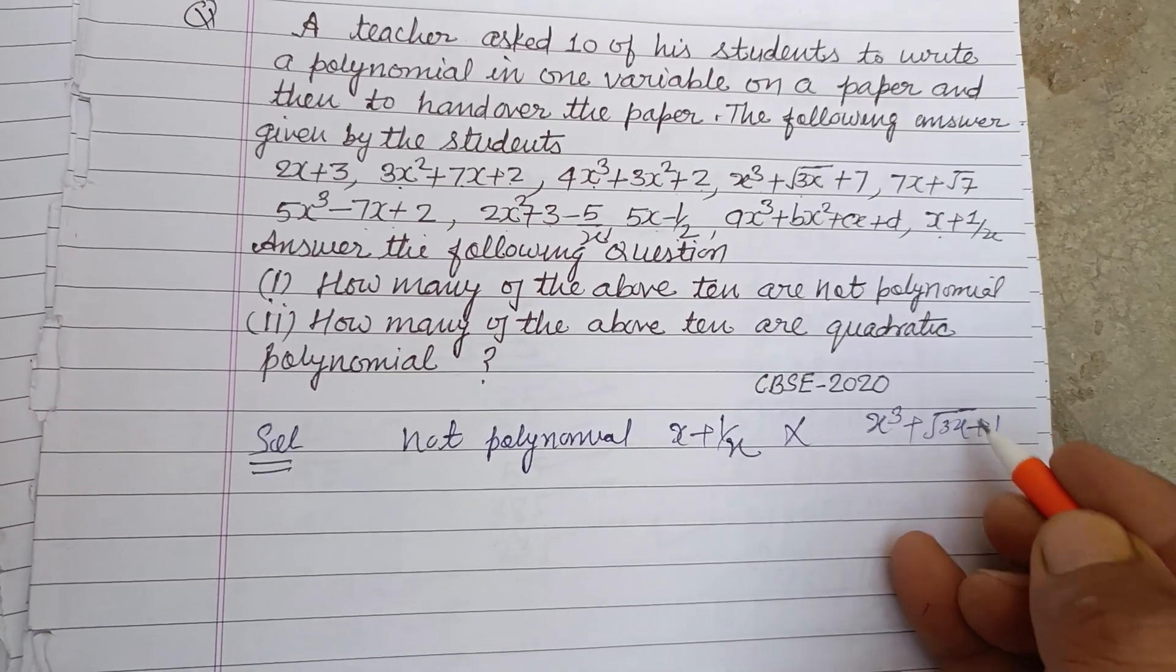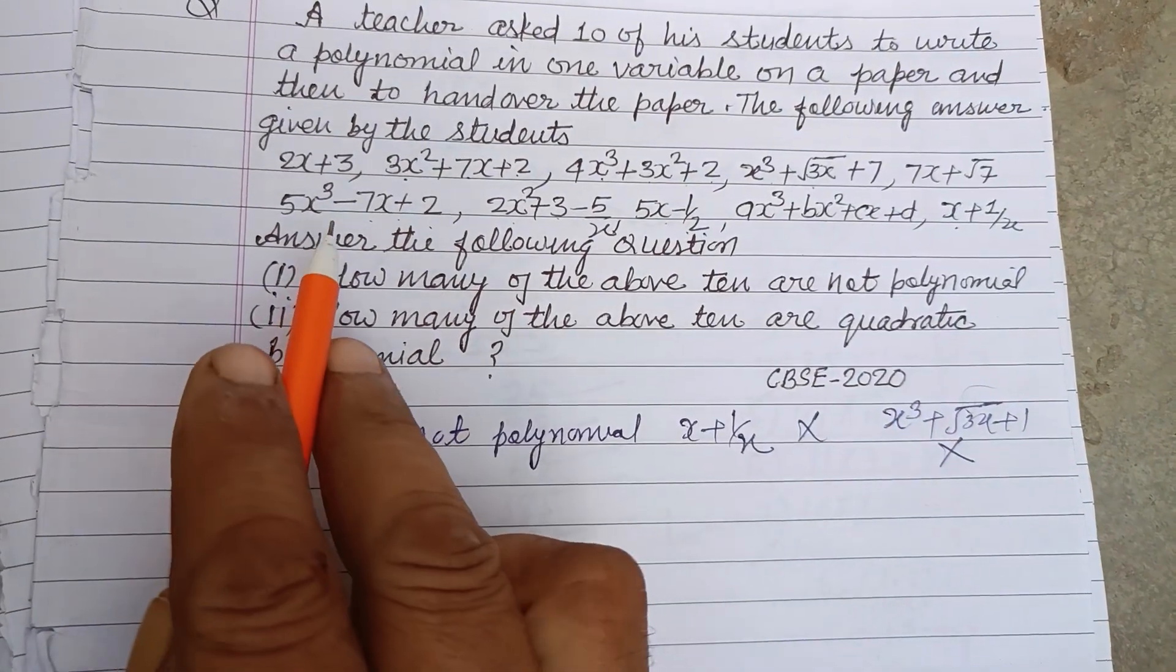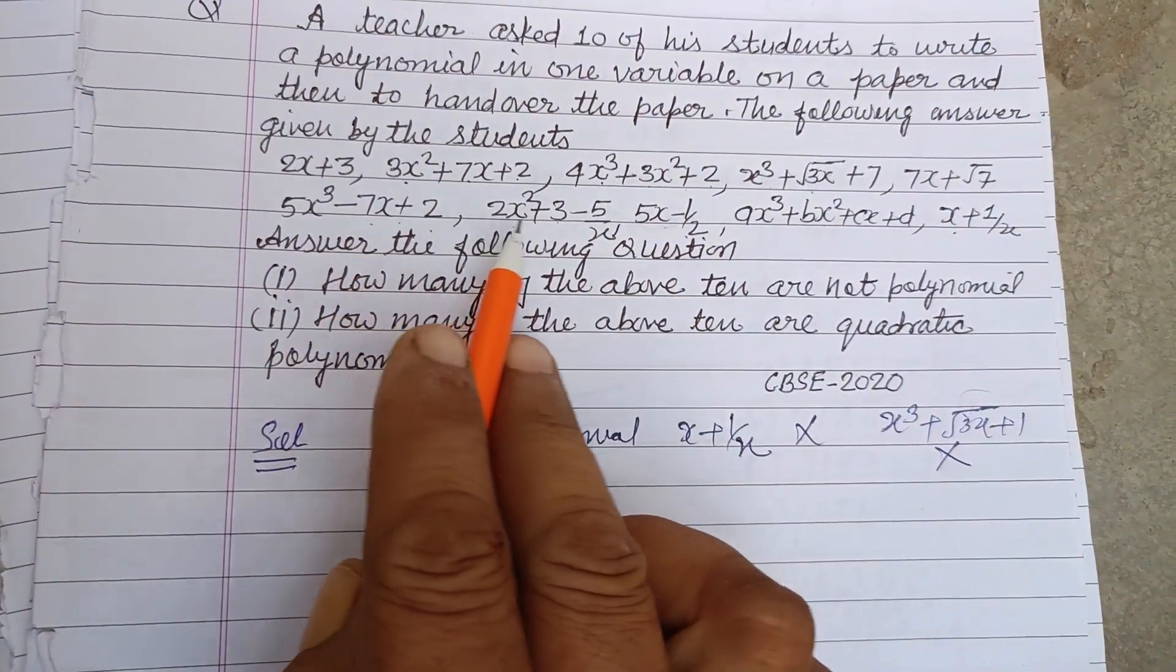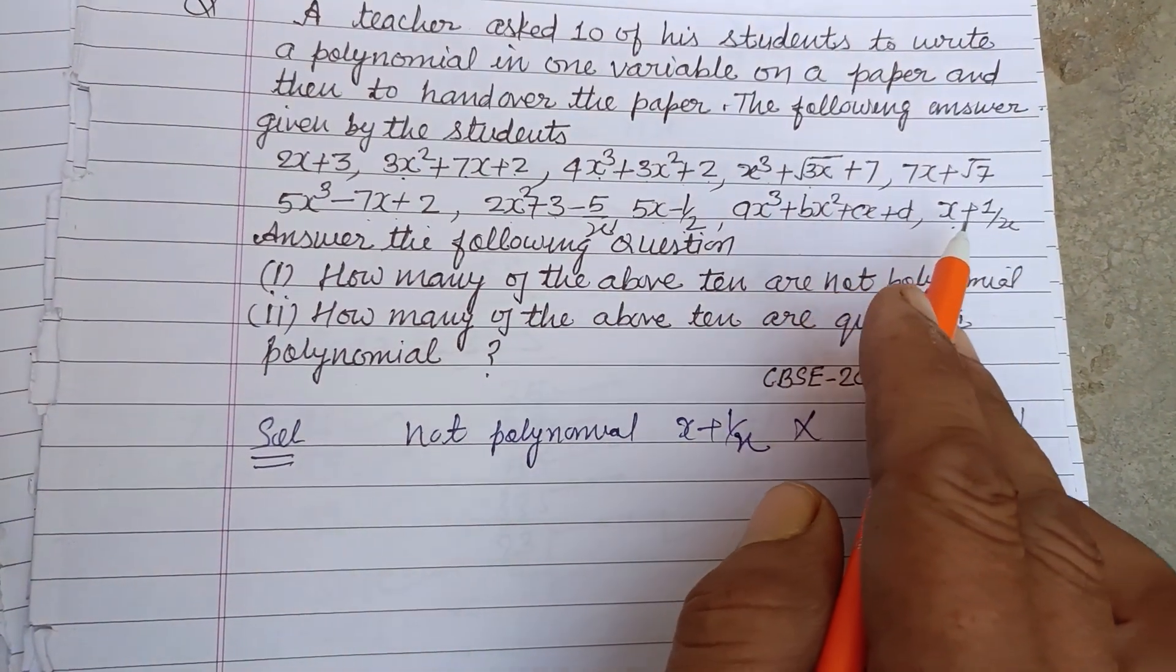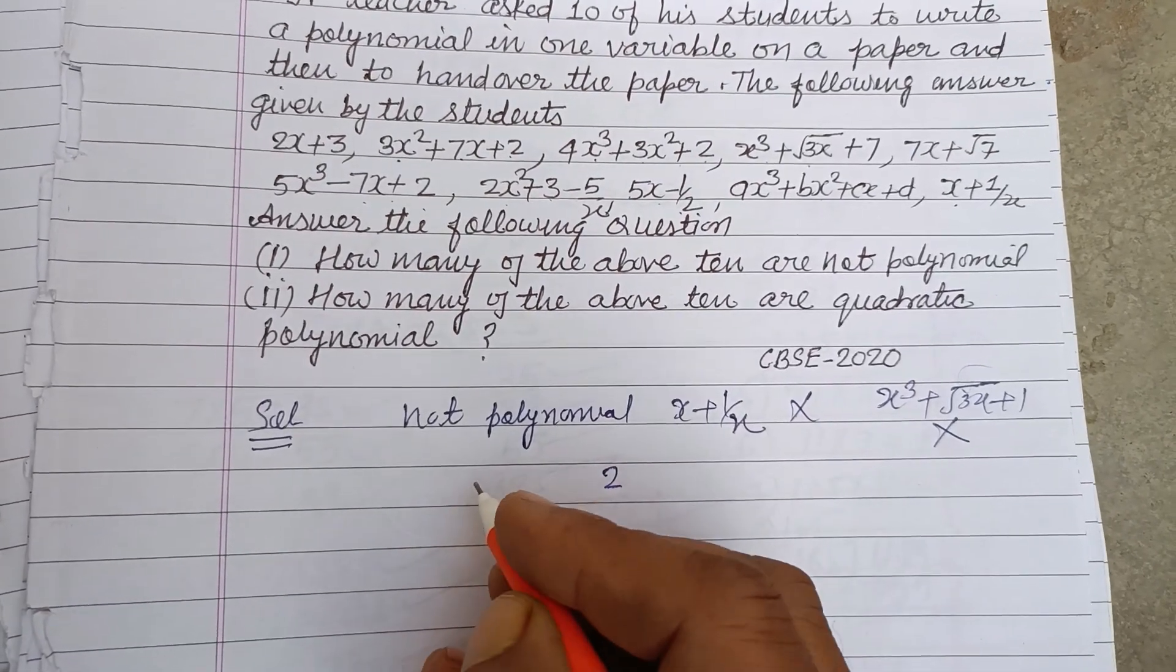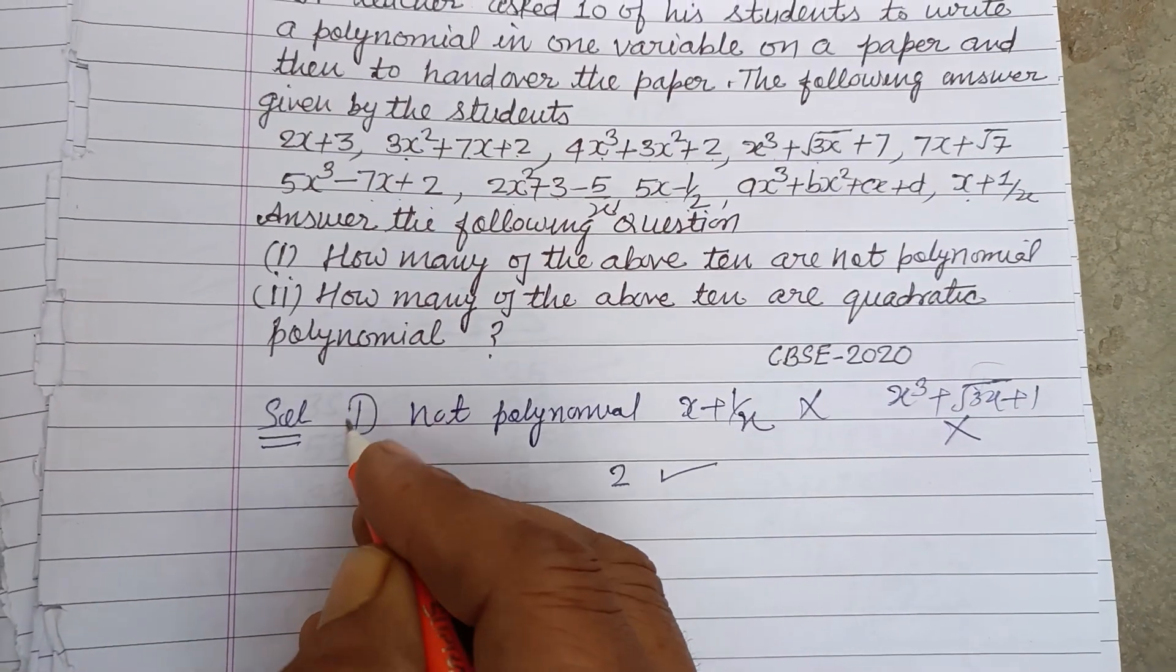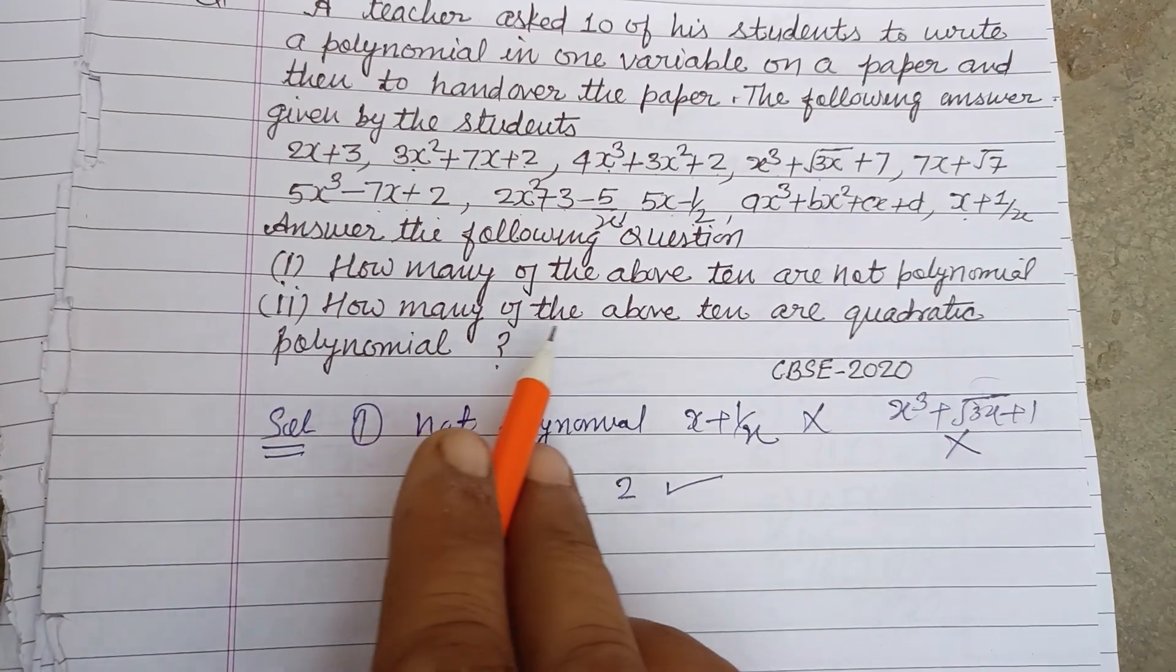5x - 1/2 is a polynomial. So 2 are not polynomials. Not polynomials are 2 in this question, okay.